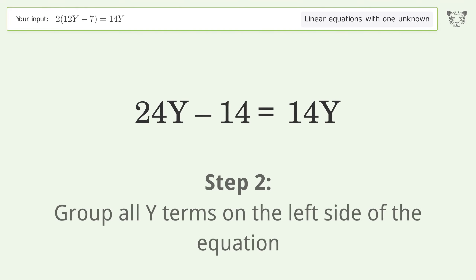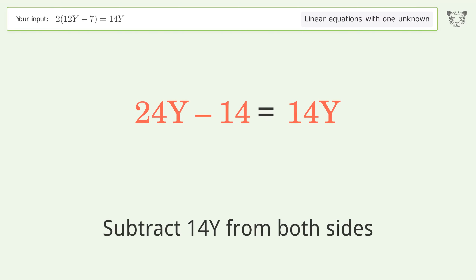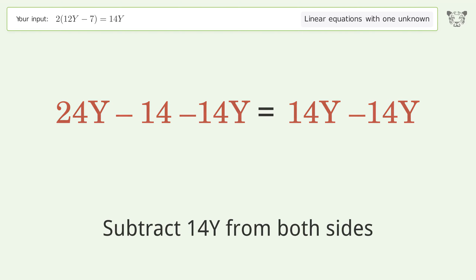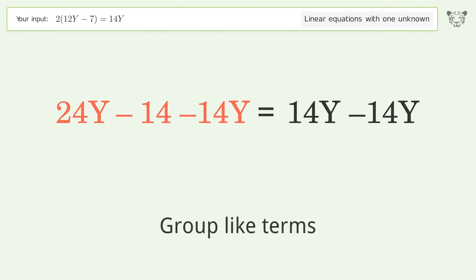Group all y terms on the left side of the equation. Subtract 14y from both sides, then group like terms.